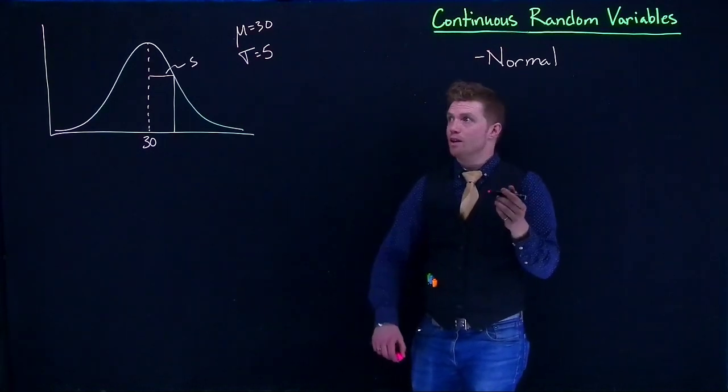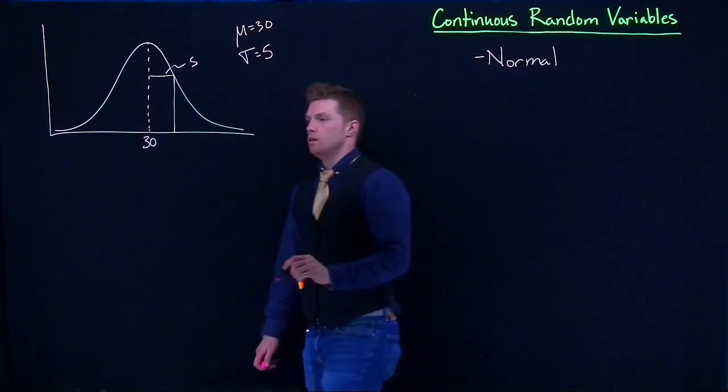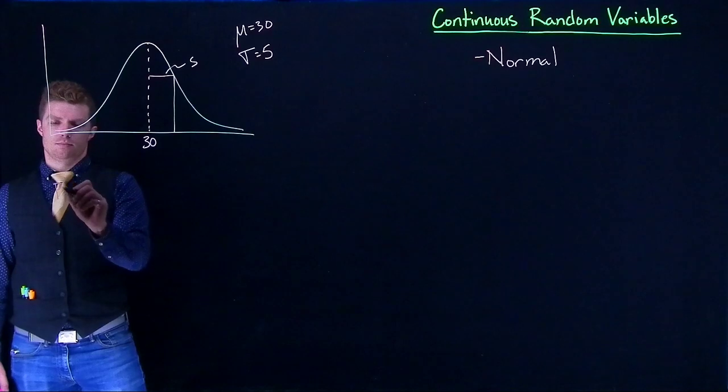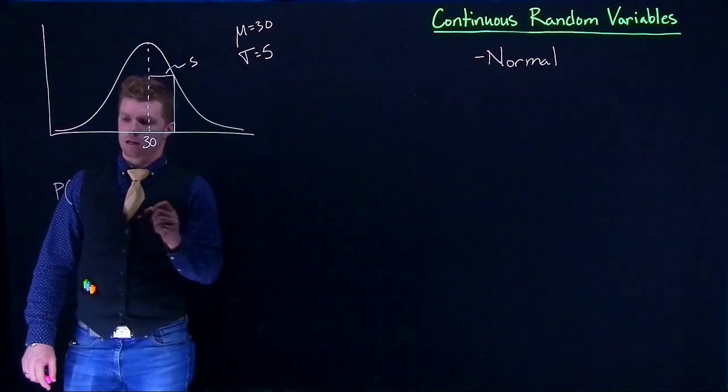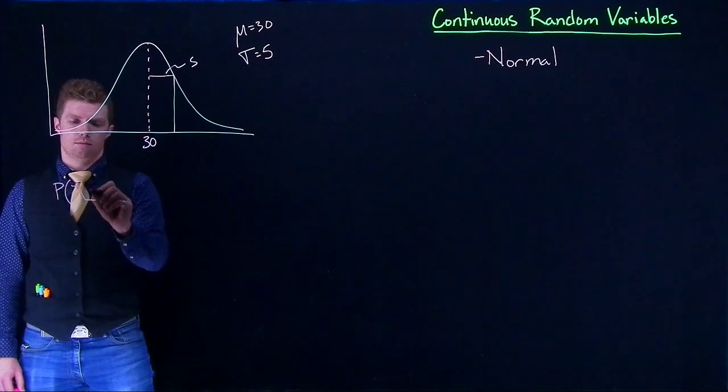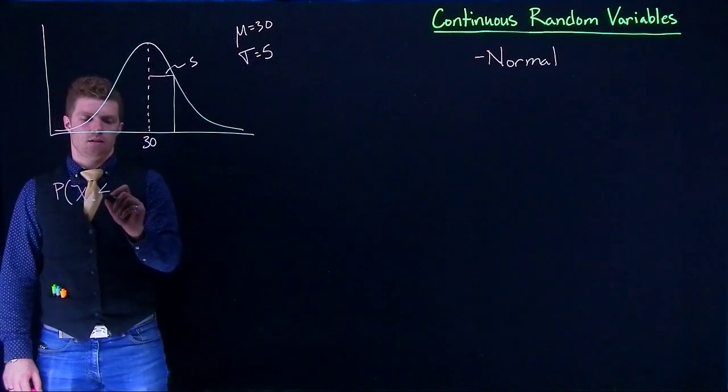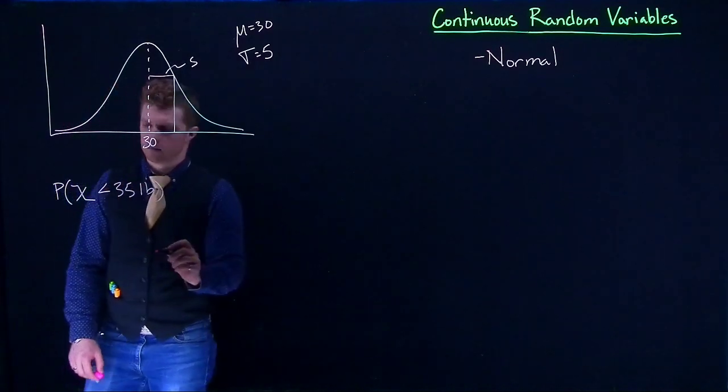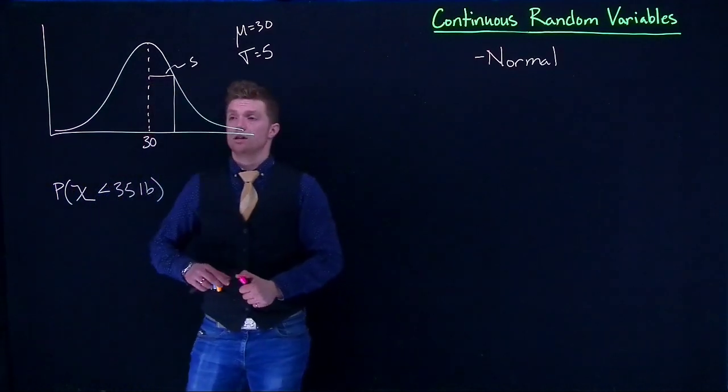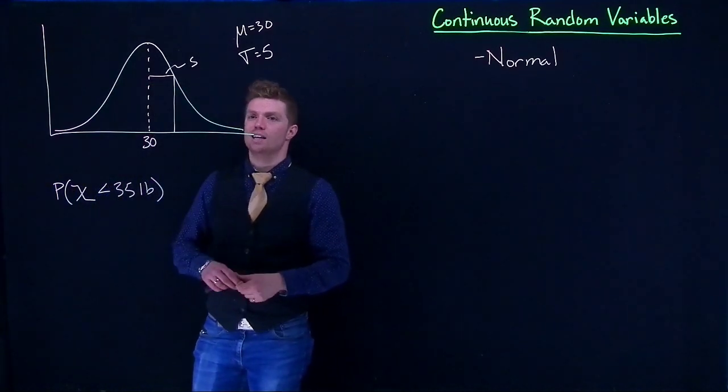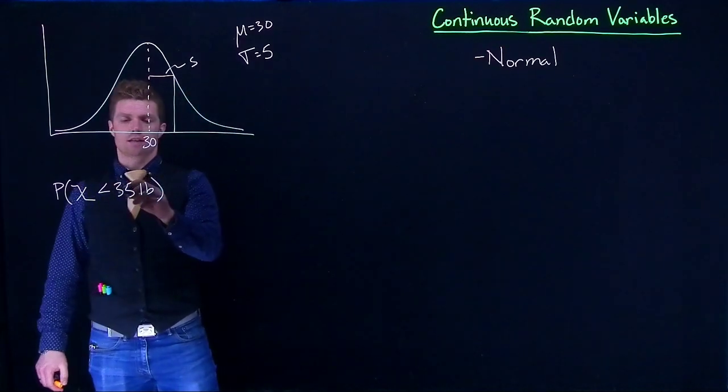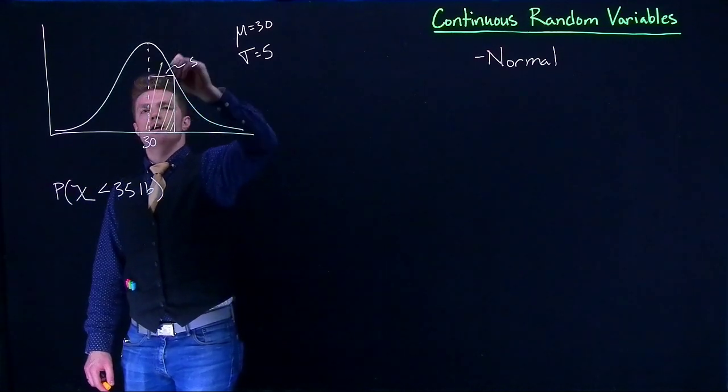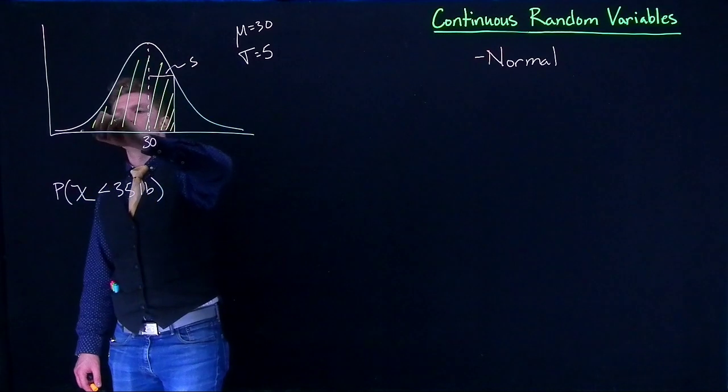Let's make some statements that we want to solve. Let's say what is the probability that a randomly selected dog will be less than 35 pounds. If I want to solve this, let's go ahead and shade in our area. I'm looking for a dog that's less than 35 pounds, so I'm looking for this area right here.